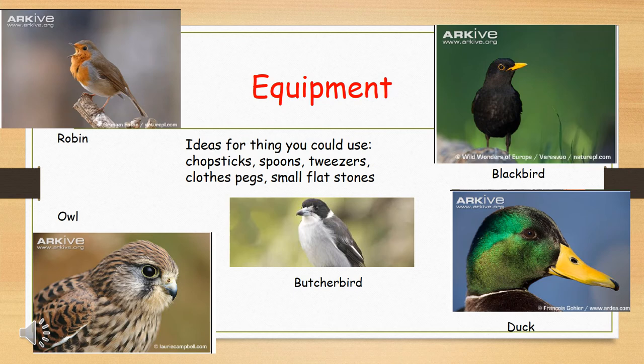So there's some ideas that we came up with of things that you might have at home that you could use. You could use two spoons and stick them together with some sellotape. Please ask your parents first. You could use some tweezers, scissors maybe, chopsticks, clothes pegs, anything that will make the beak shape. It doesn't really matter what you use, you just need to have different equipment for each bird. It will make more sense in a second when we go through the task.